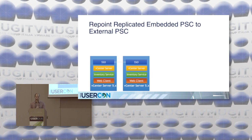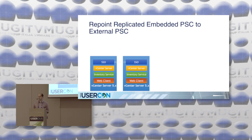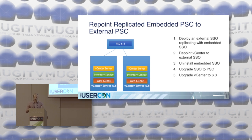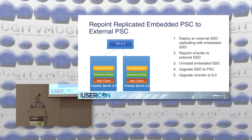When you want to change the topology, for example from two vCenter Servers with embedded link mode to enhanced link mode with external PSC: you deploy a third SSO, configure it to replicate data from existing SSOs, then uninstall the embedded SSOs to change the topology to enhanced link mode. Then you upgrade — first the SSO, then the vCenter Servers.